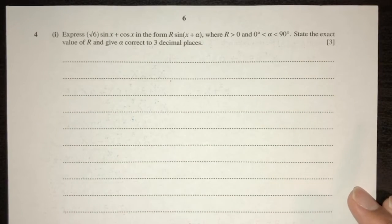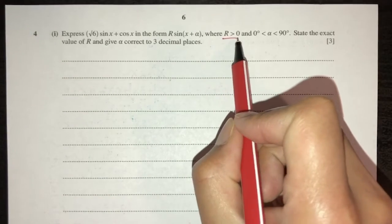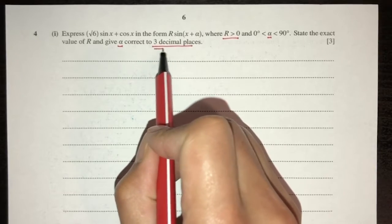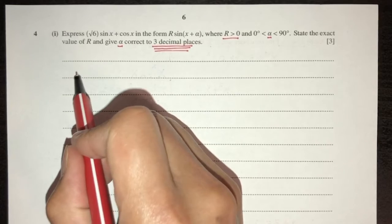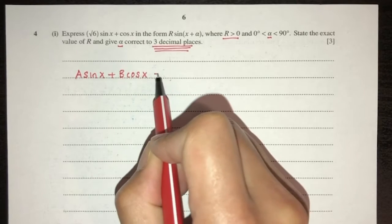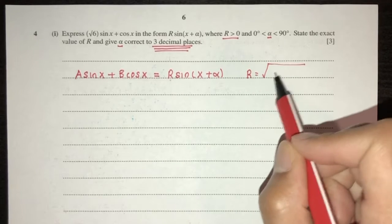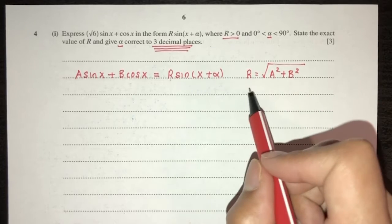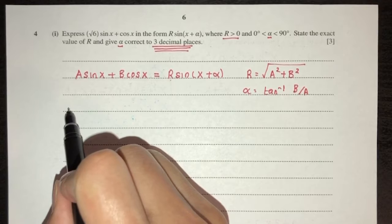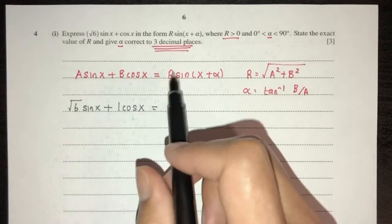Question four part one: express √6·sin(x) + cos(x) in the form R·sin(x + α), where R is positive and α is between 0 and 90 degrees. State the exact value of R and give α correct to 3 decimal places. Using the formula: R = √(a^2 + b^2) and α = tan inverse(b/a).